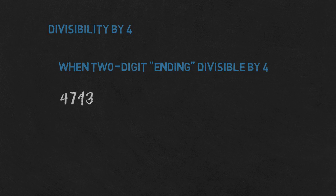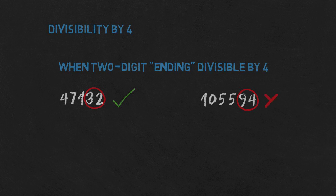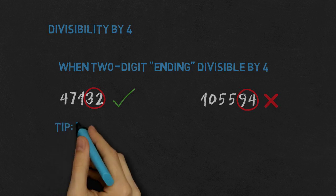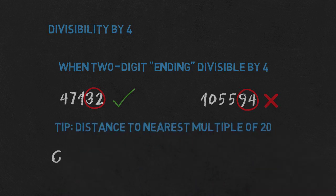A number is divisible by 4 if its two-digit ending is divisible by 4, so we only look at the last two digits. For example, if we see 32 at the end — which is divisible by 4 — then the whole number is too. Numbers ending with 94 are not divisible by 4 because 94 isn't. You can quickly divide a small number by 4 by dividing by 2 twice. Or find the distance to the nearest multiple of 20: 68 is 8 from 60, and 8 is divisible by 4, so 68 is too. 94 is 6 away from 100, and 6 isn't divisible by 4, so 94 isn't either.